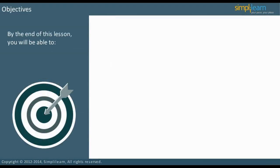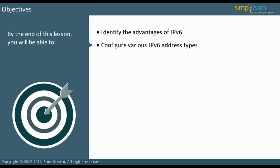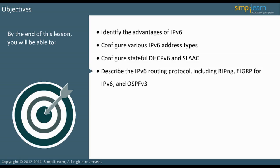By the end of this lesson, you will be able to identify the advantages of IPv6, configure various IPv6 address types, configure stateful DHCPv6 and SLAC, describe the IPv6 routing protocols including RIPng, EIGRP for IPv6, and OSPFv3, describe multi-protocol border gateway protocol, and configure access lists in IPv6. Let us start with a discussion of the advantages of IPv6 over IPv4.